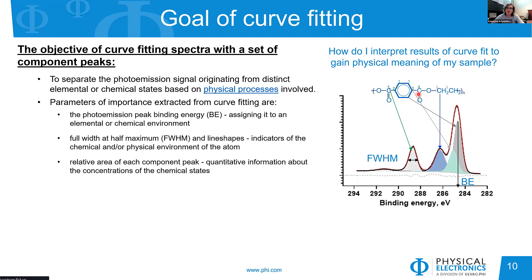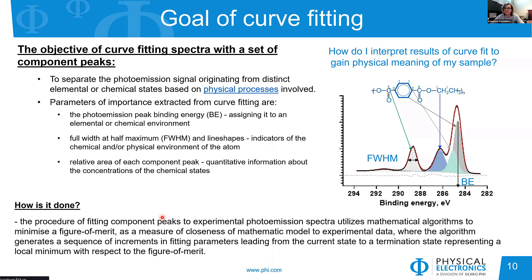For a known structure, the areas under the peaks have to correspond to the stoichiometry of our sample. We feed individual peaks to the photoemission spectrum using a mathematical algorithm that minimizes a figure of merit — whether it's residual or chi-square — by measuring how closely our mathematical reproduction of the spectrum, when all individual peaks are added together, matches the experimental data. This is done in an iterative fitting pattern, stopping once we reach the minimum of our figure of merit.